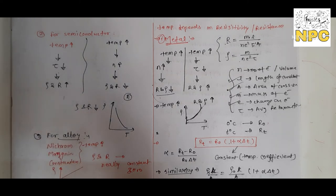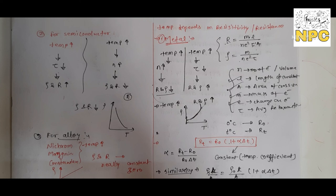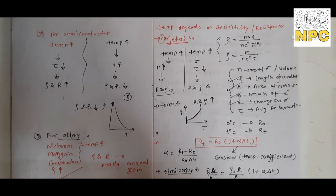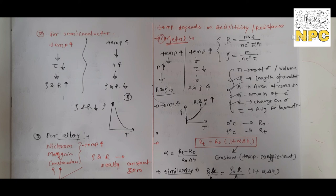I hope all the points are clear. We have studied temperature dependence of resistivity and resistance for metals, semiconductors, and alloys. In metals, increasing temperature increases resistance and resistivity. In semiconductors, they decrease with temperature. In alloys, they remain nearly unaffected. Today's lecture ends here. In the next video we will study color coding of carbon resistance. Stay tuned with NPC, please subscribe and like. Thank you so much for watching.